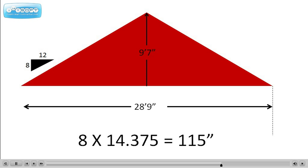The midpoint is 14.375 feet. In this example, this roof will rise 8 inches 14.375 times. Multiply this out. 8, that's the 8 inch rise, times 14.375 equals 115 inches.